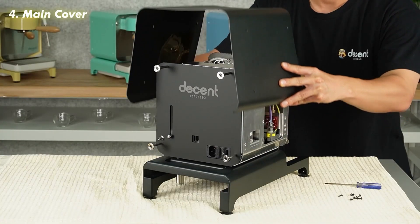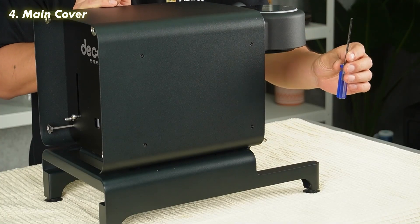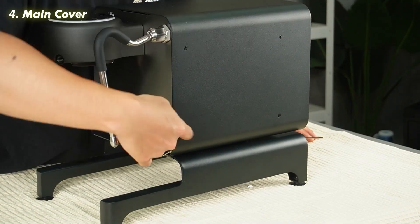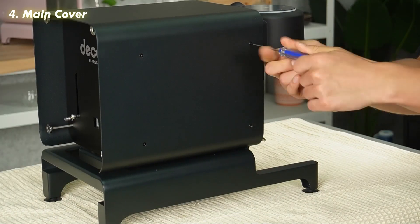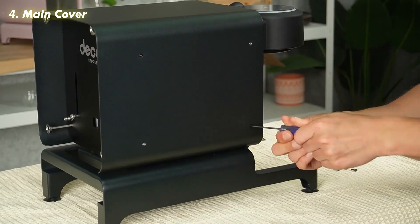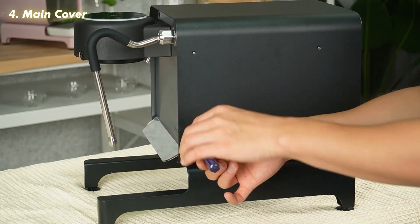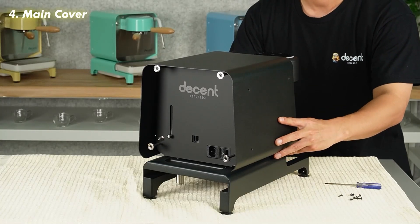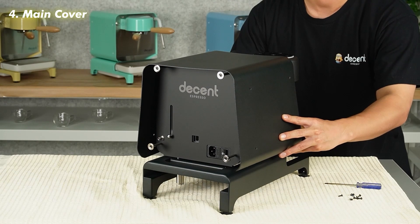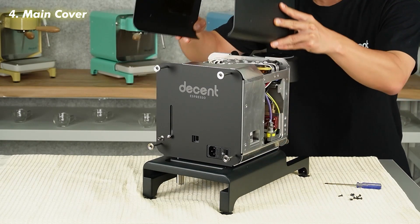Now remove the main cover. Use a T10 Torx screwdriver to remove the eight screws on the main cover. Once all screws are out, gently stretch the sides of the cover and then lift it up off the machine.